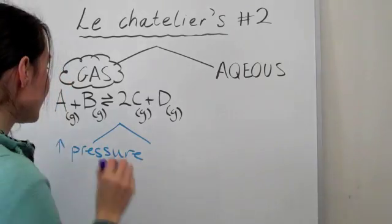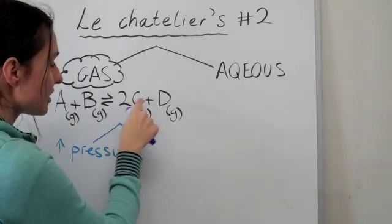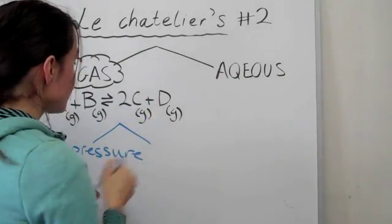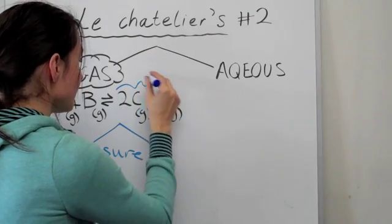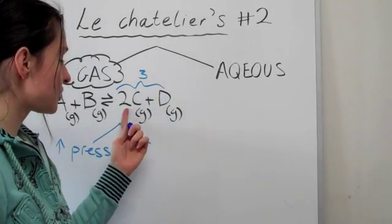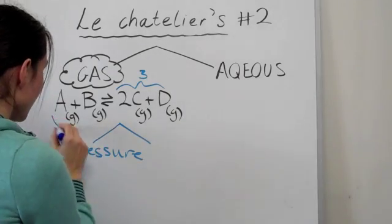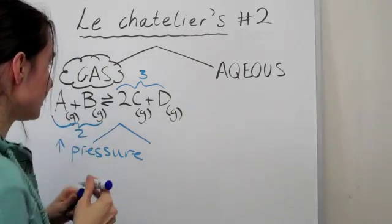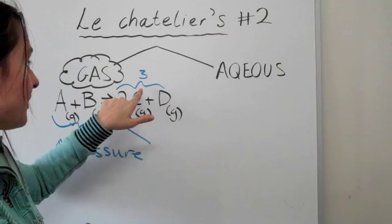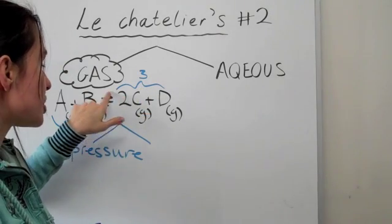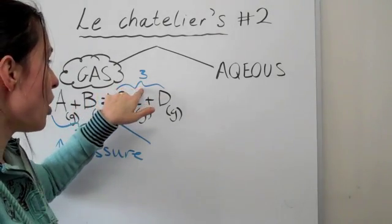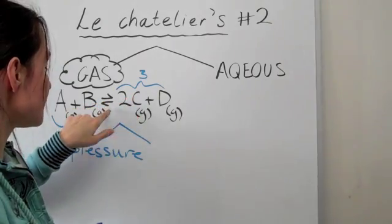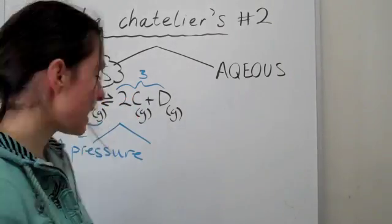So we have a choice here with this reaction. We can go to the side that generates more particles. As you can see, there's three particles here because there's two Cs and one D, and there's two particles here. So we either have a choice, our equilibrium can shift in a way to generate more particles, or it can shift in a way to generate less particles.